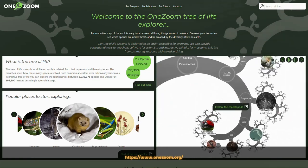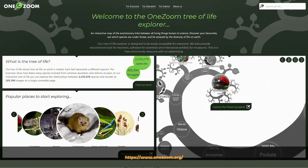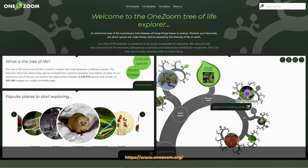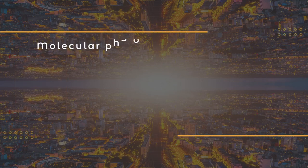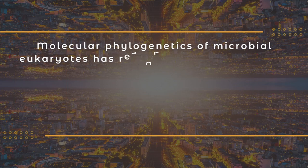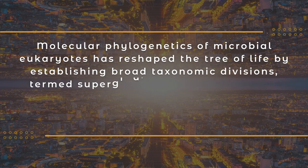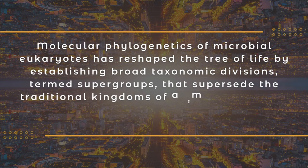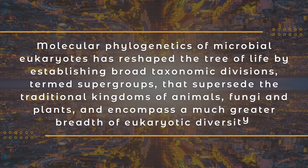I looked at the original study and unfortunately it is behind a paywall on nature.com. So if any of you subscribe to nature.com and are interested in reading this, please leave a comment below. But here is an excerpt: 'Molecular phylogenetics of microbial eukaryotes has reshaped the tree of life by establishing broad taxonomic divisions termed supergroups that supersede the traditional kingdoms of animals, fungi and plants and encompass a much greater breadth of eukaryotic diversity.'